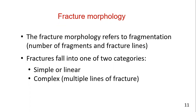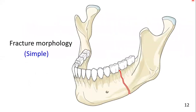Fractures fall into one of two categories: simple (or linear) and complex, having multiple lines of fractures. Simple fractures are linear fractures with one fracture line, resulting in two fragments. Simple fractures that are infected or located in an atrophic mandible are also considered complex fractures with regard to treatment.